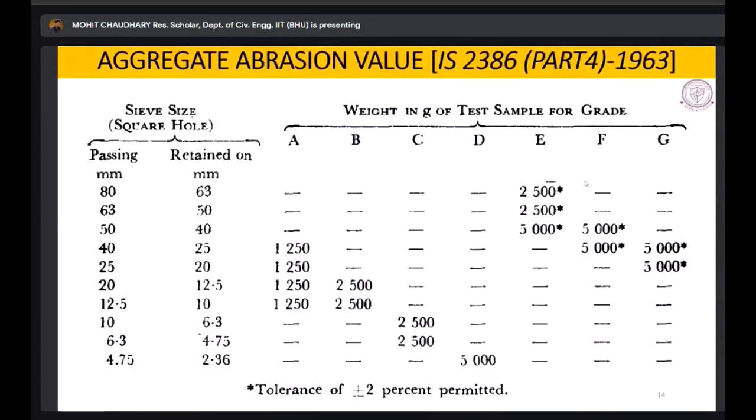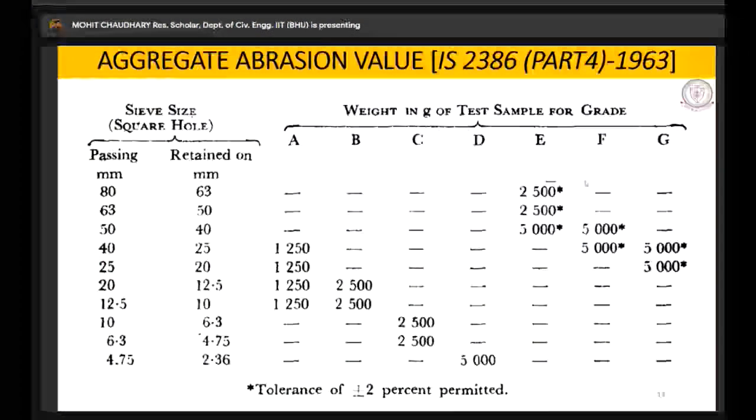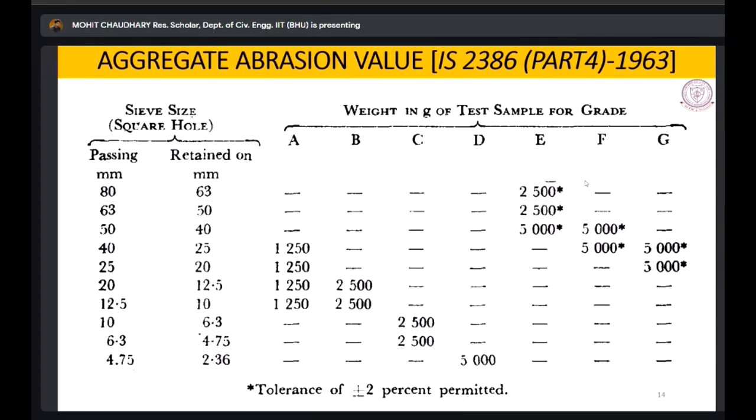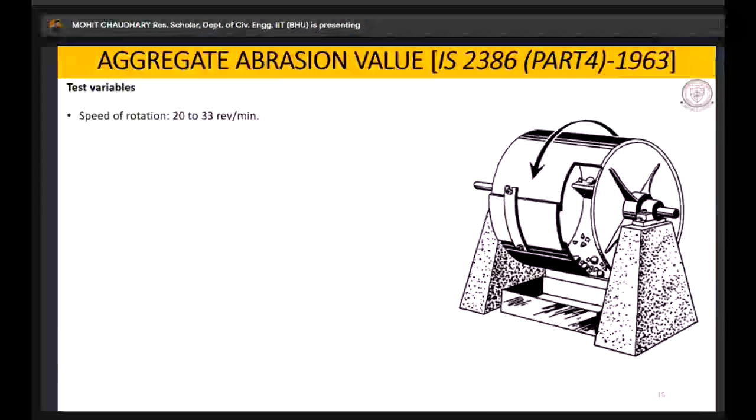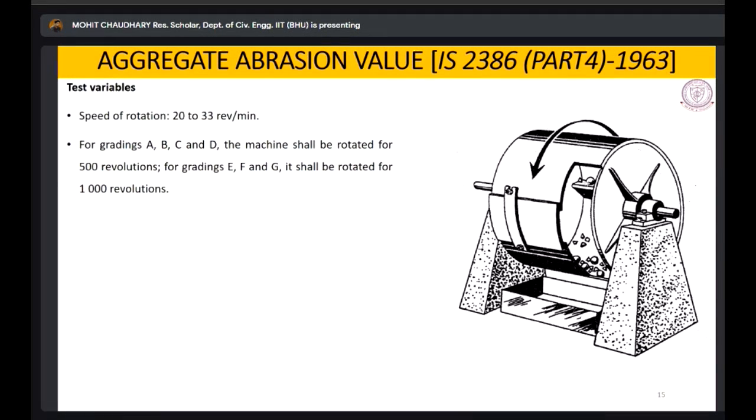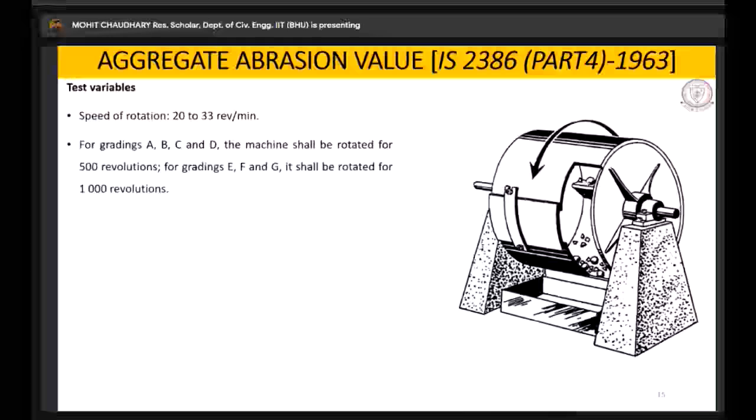These are the specifications. Based on the sieve size, if your aggregate is falling in any category, we use these different gradations. They have mentioned the weight for each category and the number of balls required for each gradation. It is already given in the code. The speed of rotation is 20 to 33 revolutions per minute.